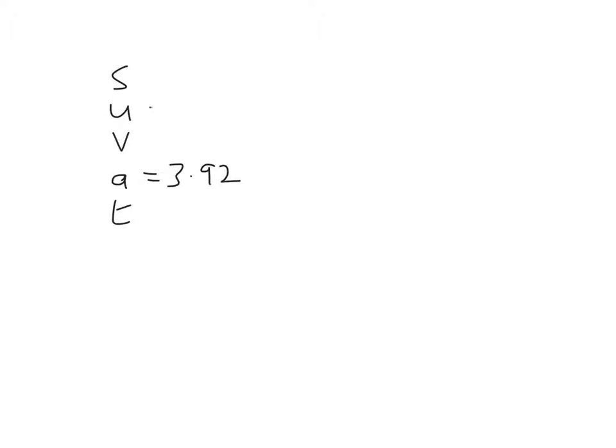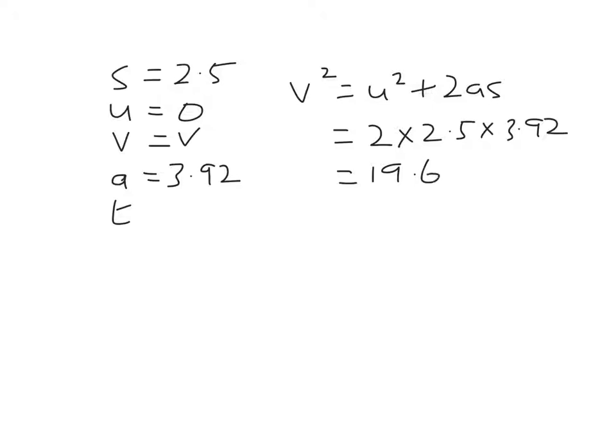It's released from rest, so that's 0, v we're trying to find out, and until the friction kicks in, it's 2.5 metres. So we're not interested in t, so it's v squared is u squared plus 2as. So u is 0, so it's 2 times 2.5 times 3.92, so that's 5 times 3.92, 19.6. So the speed at this point is the square root of 19.6, which is 4.427. OK, that's the first part.